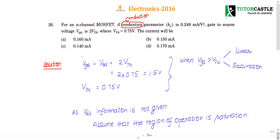Question number 26. For an N-channel MOSFET, the conduction parameter — not 'condension' — is denoted KN. KN is 0.249 milliampere per volt square. The gate-to-source voltage VGS is 2VTN, meaning 2 times the threshold value of the N-channel MOSFET, where VTN is given as 0.75. Then what will be the drain current?